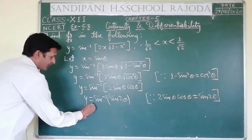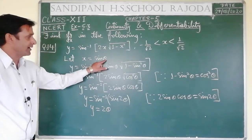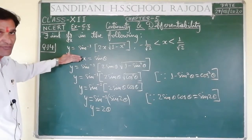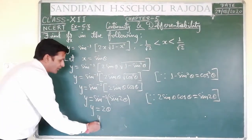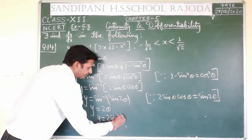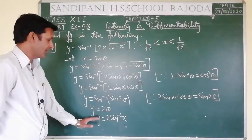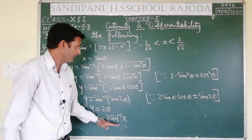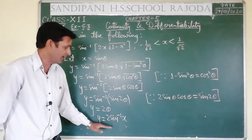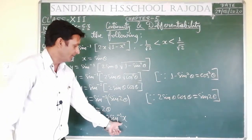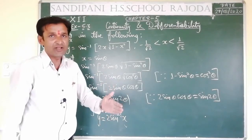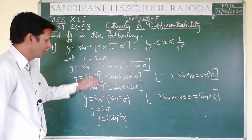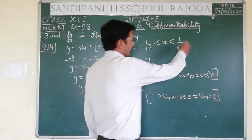यहाँ sin⁻¹ से sin cancel हो जाएगा, then y = 2θ. अब theta को calculate करेंगे तो वो sin⁻¹ x हो जाएगा — क्योंकि sin को RHS से LHS में shift करेंगे तो sin inverse का form आता है, जैसा कि inverse trigonometry में पढ़ा है। तो y = 2 sin⁻¹ x. This means now we are able to differentiate it in a very convenient manner and we can apply the formula directly.